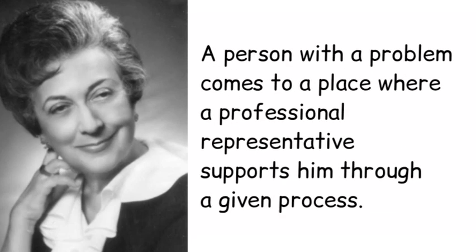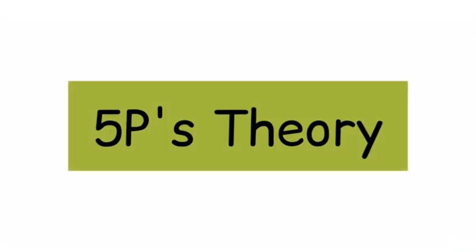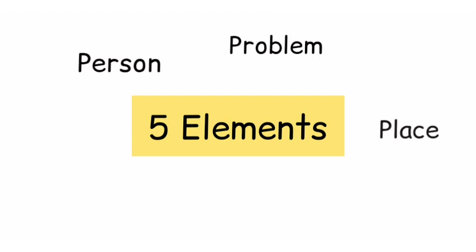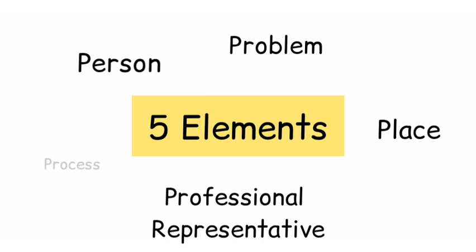Elements of social casework: According to Helen Harris-Perlman, casework is defined as a person with a problem coming to a place where a professional representative supports him through a given process — known as the five-piece theory. According to this definition, there are five elements of social casework: person, problem, place, professional representative, and process.